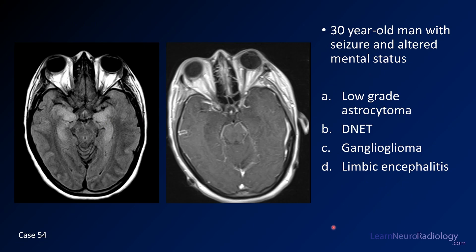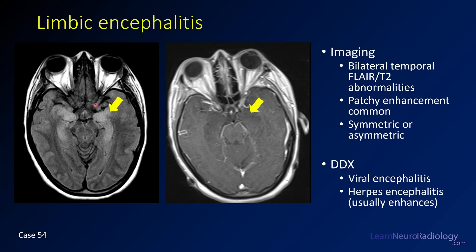Case number 54 is a 30-year-old man with seizure and altered mental status. MRI images include an axial FLAIR and axial post-contrast. Choices are low-grade astrocytoma, DNET, ganglioglioma, or limbic encephalitis. This is limbic encephalitis — bilateral T2 abnormality in the hippocampi, which look swollen and T2 bright. It's symmetric with no enhancement. The symmetry makes a tumor less likely, and the lack of enhancement with symmetry makes herpes less likely. Limbic encephalitis is an autoimmune or inflammatory condition often associated with malignancy.